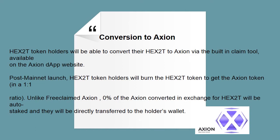HEX 2T token holders will be able to convert their HEX 2T to Axion via the built-in claim tool available on the Axion DApp website. Post mainnet launch, HEX 2T token holders will burn the HEX 2T token to receive Axion in a 1-to-1 ratio. Unlike free claimed Axion, 0% of the Axion converted in exchange for HEX 2T will be auto-staked — it will be directly transferred to the holder's wallet.